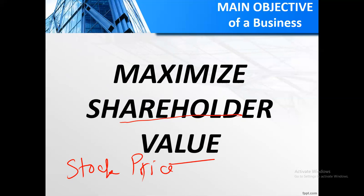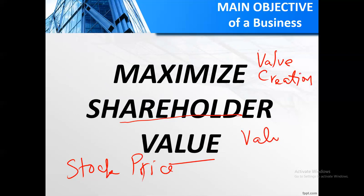If a company's stock price increases, that's called value creation. If the stock price falls, that's called value destruction. The objective should be to create value for shareholders — maximization of shareholder value. Let me discuss some arguments against making profit maximization the main objective versus wealth maximization. Profit maximization, cost minimization, and customer satisfaction are all important — but the main objective should be maximizing shareholder wealth.